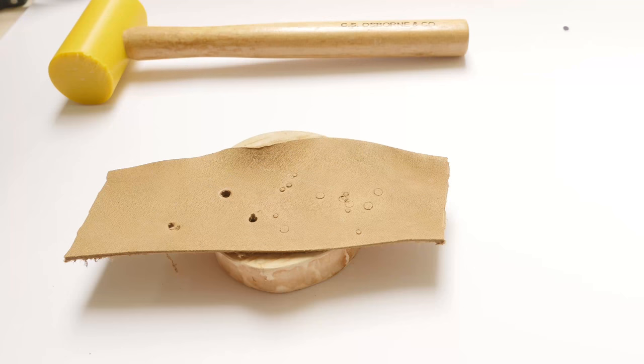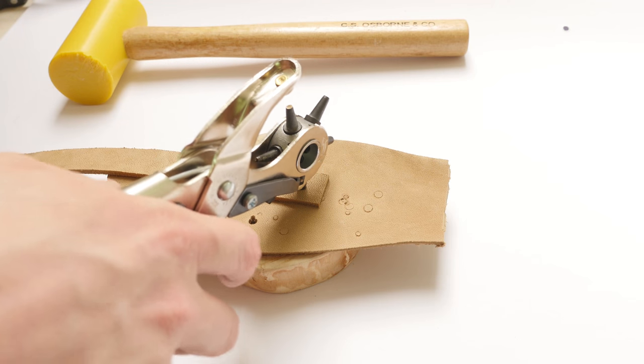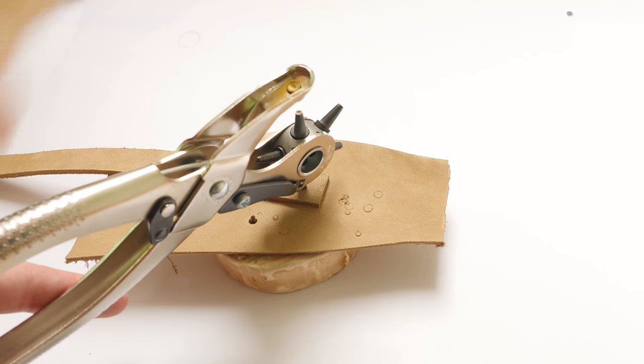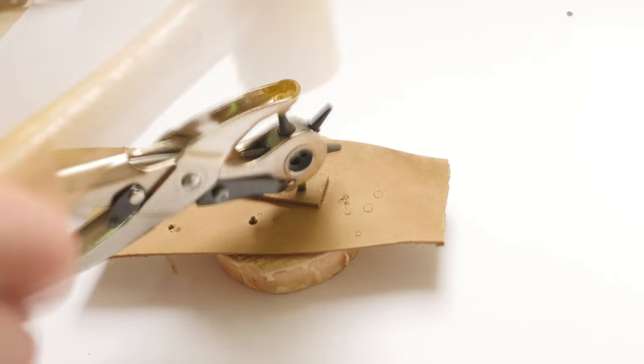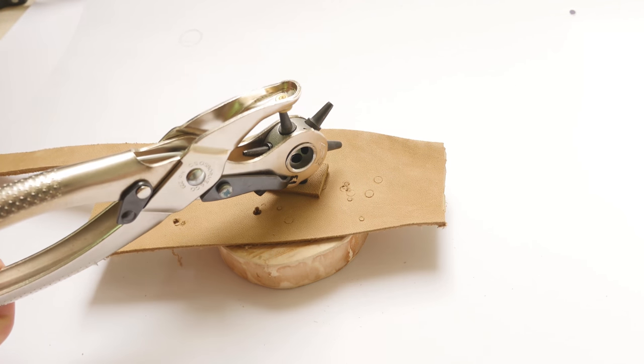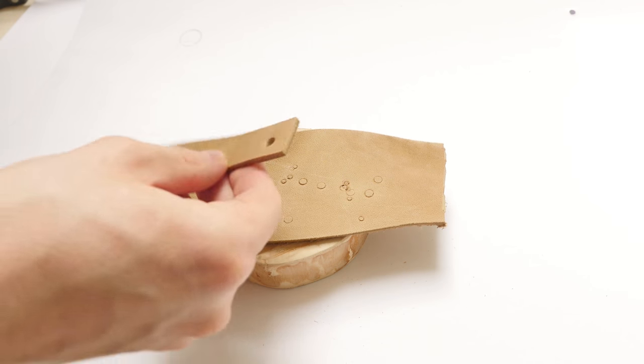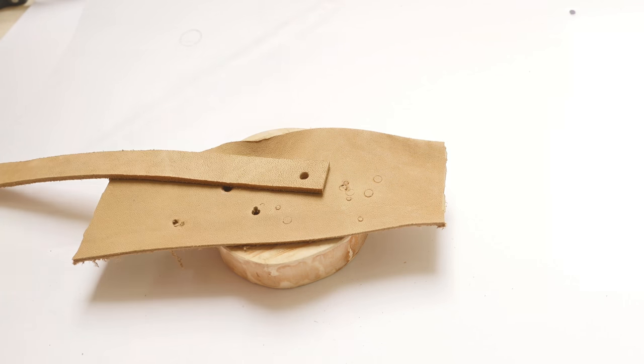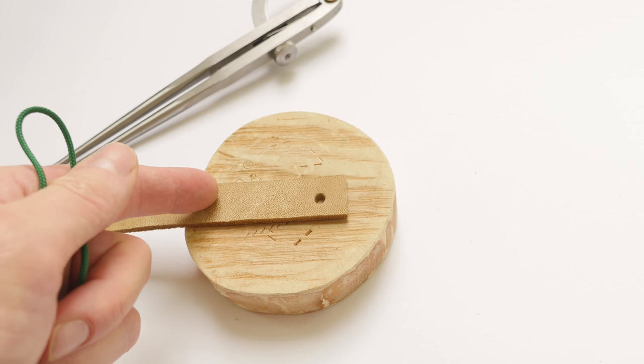So first the hole for our snap. The next step is punching in the holes for the center braid.